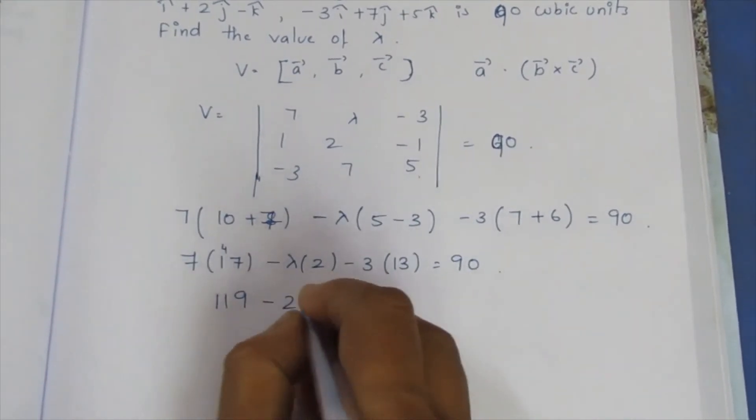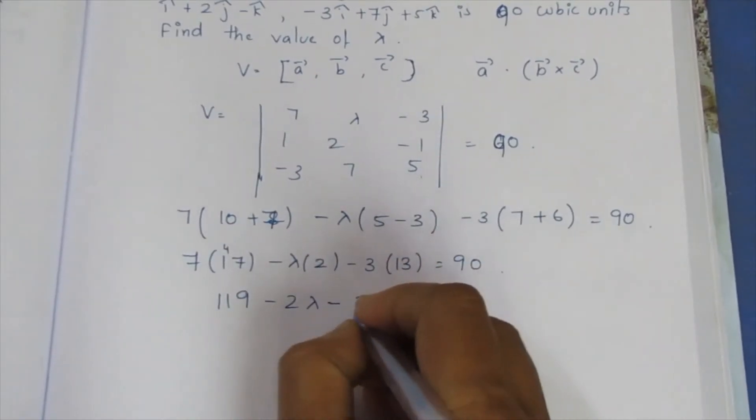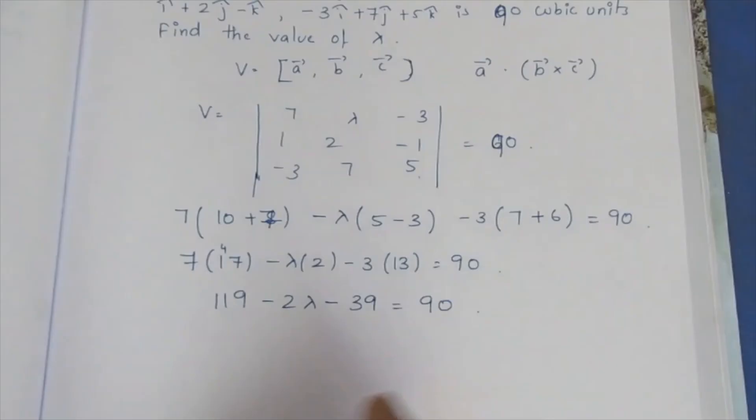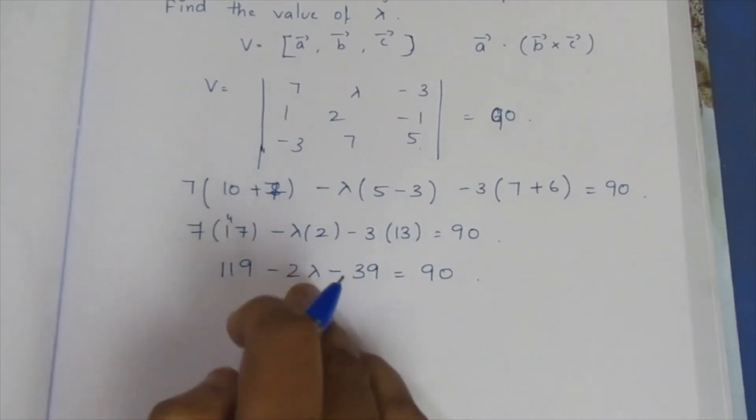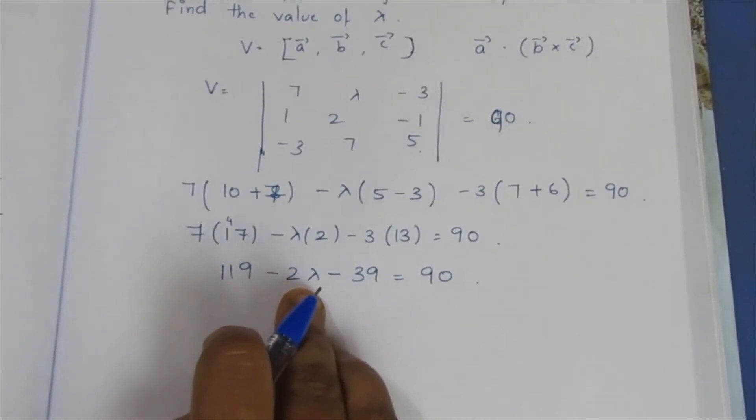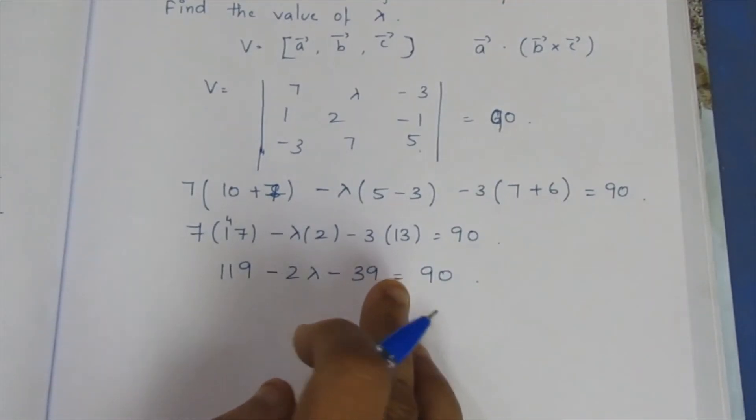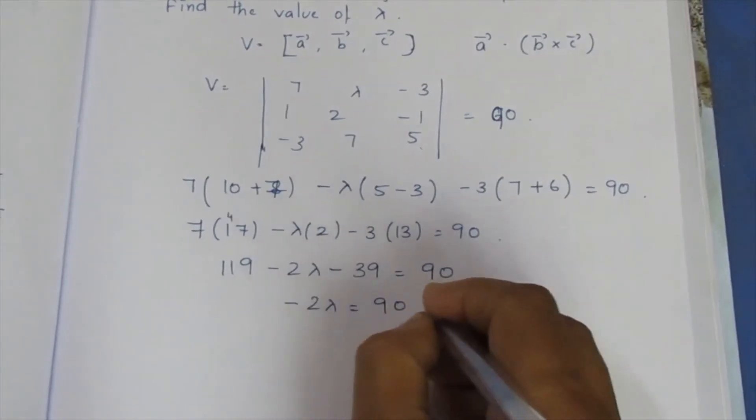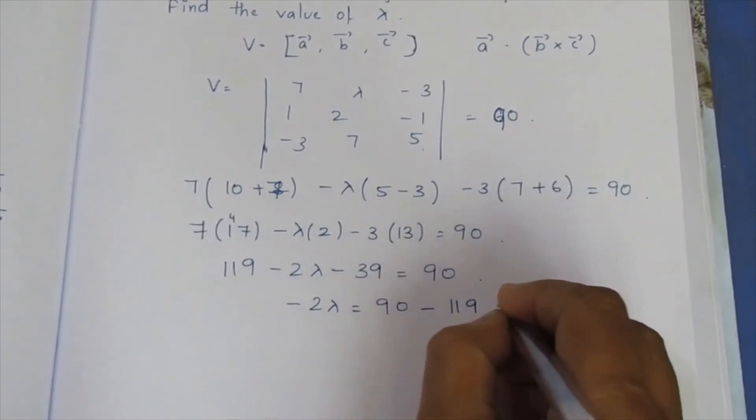119 minus 2 lambda minus 39 is equal to 90. This is equal to, in the side of the line.